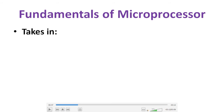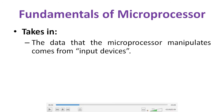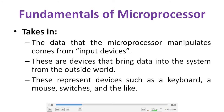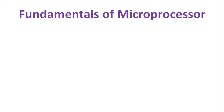The processor requires some data to process. We provide data to perform arithmetic or logical operations. The data that the processor manipulates comes from input devices. Input devices bring data into the system from the outside world — devices such as keyboards, mice, and switches.